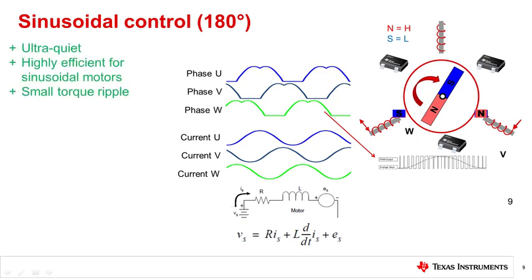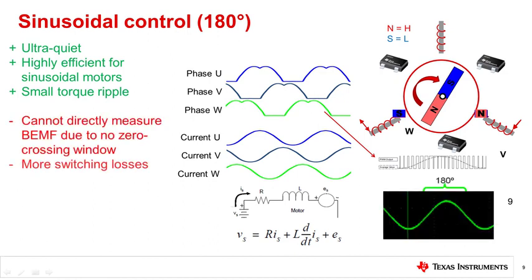Sinusoidal control provides many advantages in comparison to trapezoidal commutation. The motor performance is very quiet, highly efficient, and produces a very small torque ripple. In terms of downsides, sinusoidal control is more difficult to implement because more tightly controlled PWM is required, there are higher switching losses compared to trap commutation, and there is increased complexity as described in sensorless techniques.